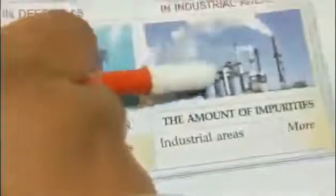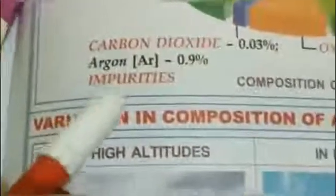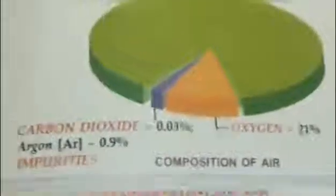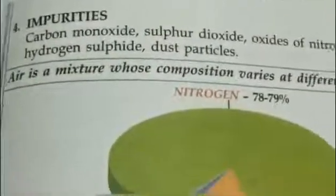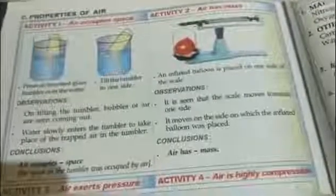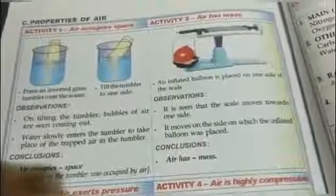In industrial areas, the impurities - sulfur dioxide, carbon monoxide - will be more because of the gases released by the chimneys of the industries. Air is also matter, so air will occupy space and have mass.